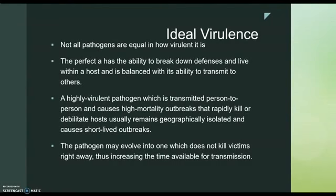Not all pathogens are equal in how virulent they are. The perfect pathogen has the ability to break down defenses and live within a host, balanced with its ability to transmit to others. A highly virulent pathogen transmitted person to person that causes high mortality usually remains geographically isolated and causes short-lived outbreaks. The pathogen may evolve into one which does not kill victims right away, increasing the time available for transmission — the perfect storm for a long-lived outbreak that is not geographically isolated.